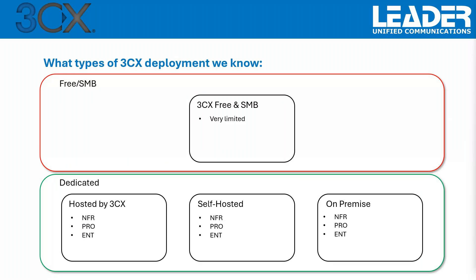There are different types of 3CX deployments. The free SMB version is very limited — up to 20 users, limited SIP trunks, and so on. Then we have dedicated deployments, either hosted by 3CX or self-hosted or on-premise. Either can use an NFR license — your personal or partner license. As a 3CX partner, you get an NFR license, actually two: one for testing and one for your own use.